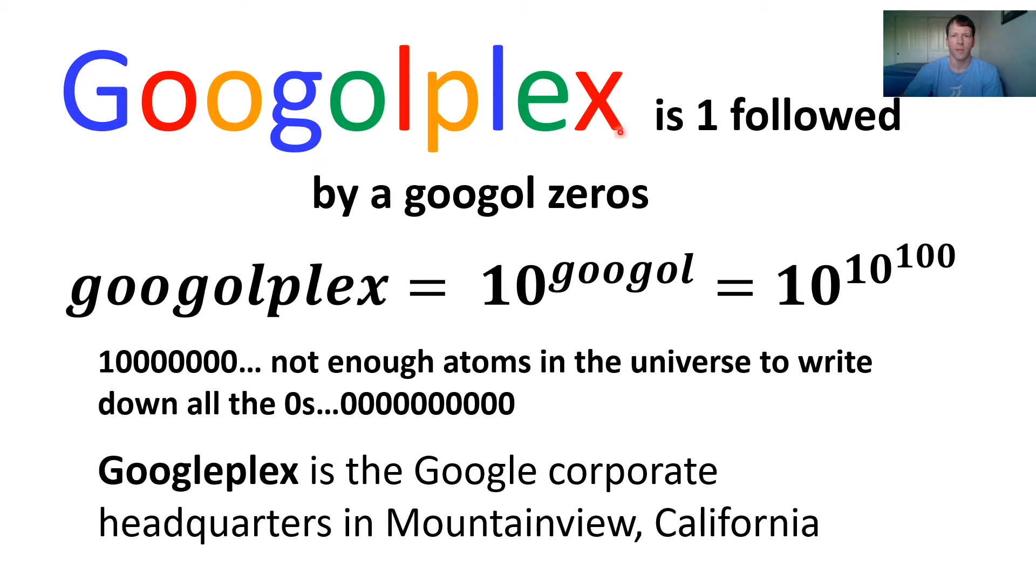Okay, Googleplex is the definition of a Googleplex is one followed by a googol zeros. So it's 10 to the googol power, which is 10 to the power of 10 to the 100. So this is some enormous number. And if we try to write it down, explicitly listing all the zeros, since it has a googol zeros, there's only 10 to the 80th particles in the universe. And we're trying to write down 10 to the 100th zeros, and you simply can't do it.